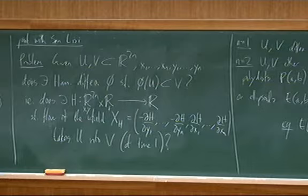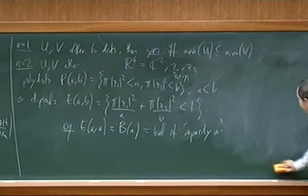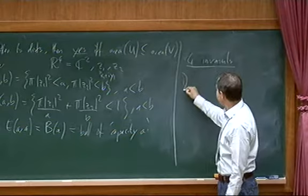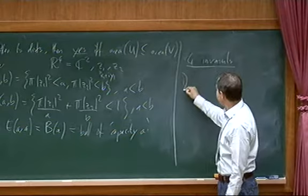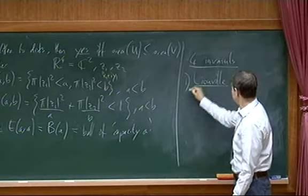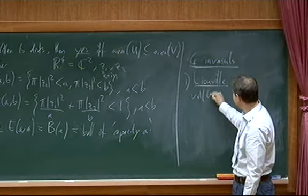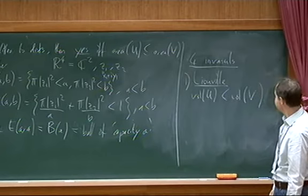When can you embed one of these domains in another in R⁴, with a less than b? There are four kinds of invariants you can apply. First, by Liouville's theorem, if there's a Hamiltonian map taking one domain into another, then Hamiltonian flows preserve volume, so the volume of U has to be less than the volume of V. That's been known since the 19th century.